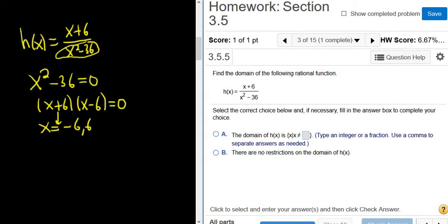So x cannot be equal to these numbers, right? Because if it is, then the bottom is 0. You'll notice that if you were to factor first, you would get this.